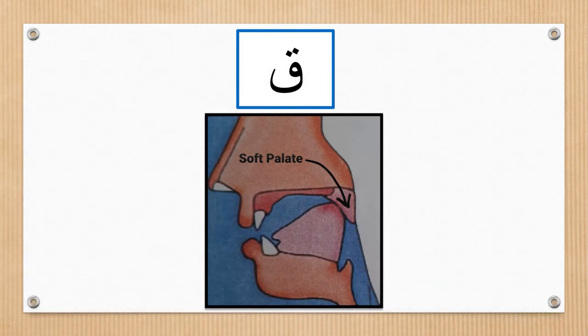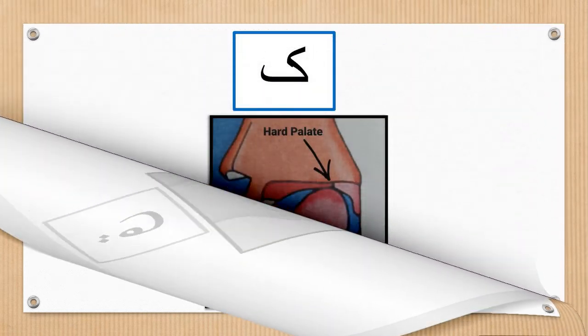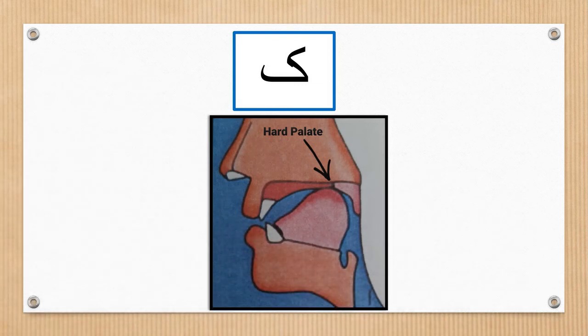When the deepest part of the tongue touches the soft palate of the mouth, then qaf is pronounced. Similarly, when the deepest part of the tongue touches the hard palate of the mouth, then kaf is pronounced.